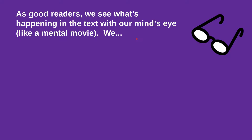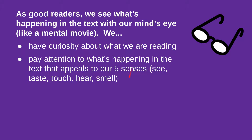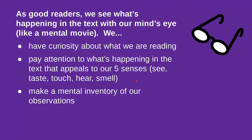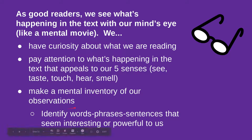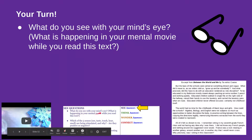As good readers, we 'see' what's happening in the text with our mind's eye — like a mental movie. We have curiosity about what we're reading and pay attention to what is happening in the text that appeals to our five senses: what's being described, what we see, what things taste like, how they feel, what they sound like or smell like. We make a mental inventory of our observations — a list of things we've noticed — and we identify words, phrases, and sentences that seem interesting or powerful to us.